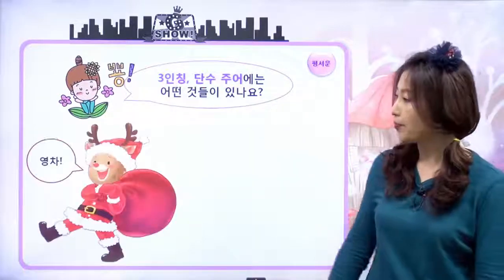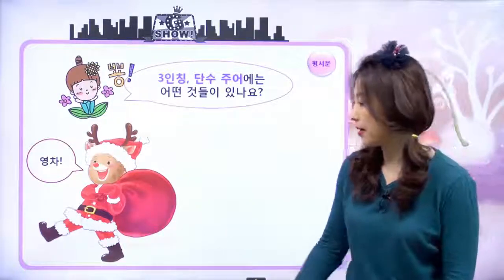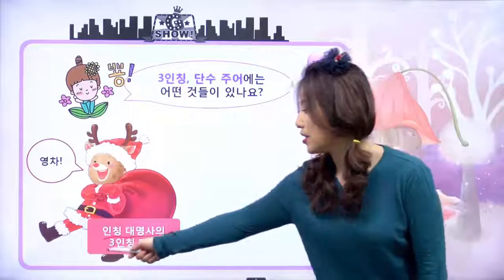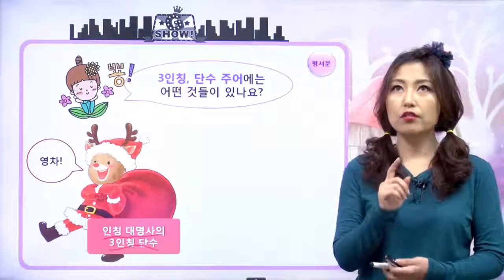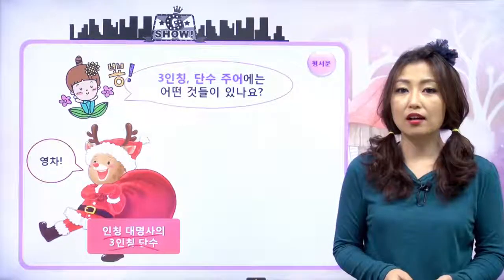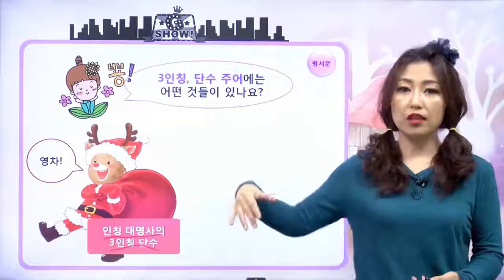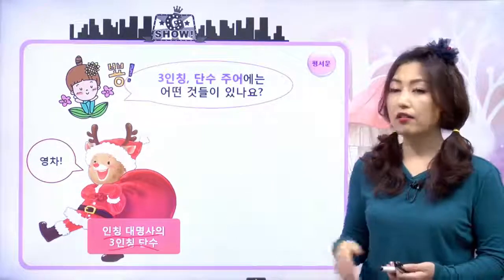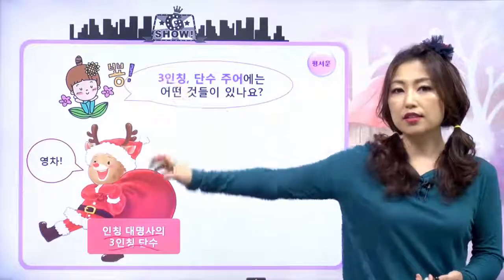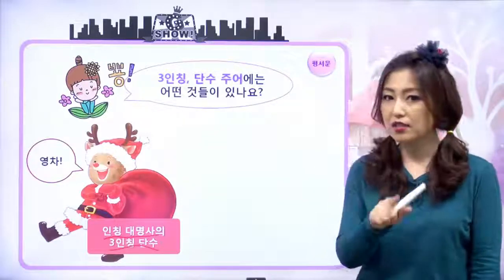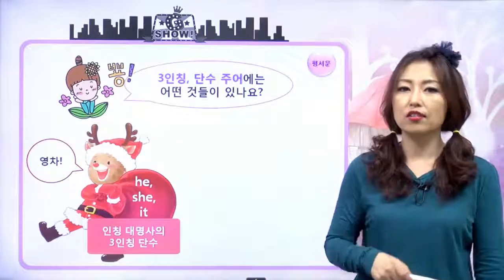인칭 대명사에 3인칭 단수가 어떤 게 있었냐면 he, she, it이 있었어요. 그, 그녀, 그것 이렇게 세 개. 복수는 여기에서 상관 있어요? 없어요. 단수만 해당되는 얘기예요.